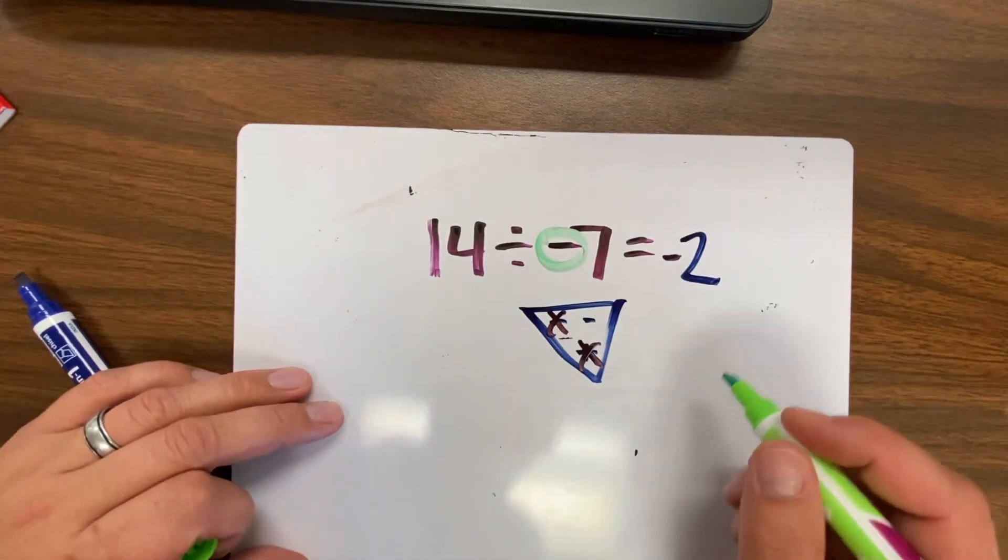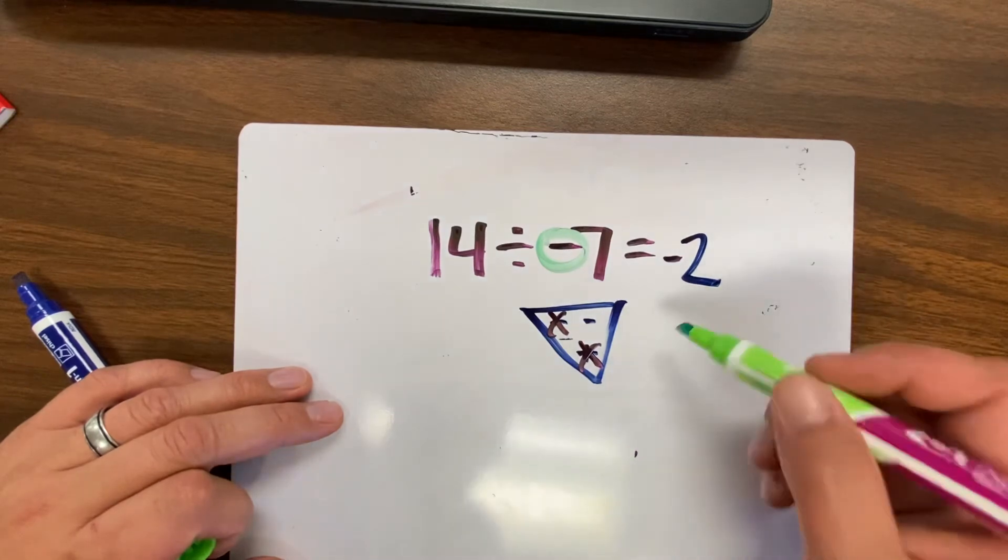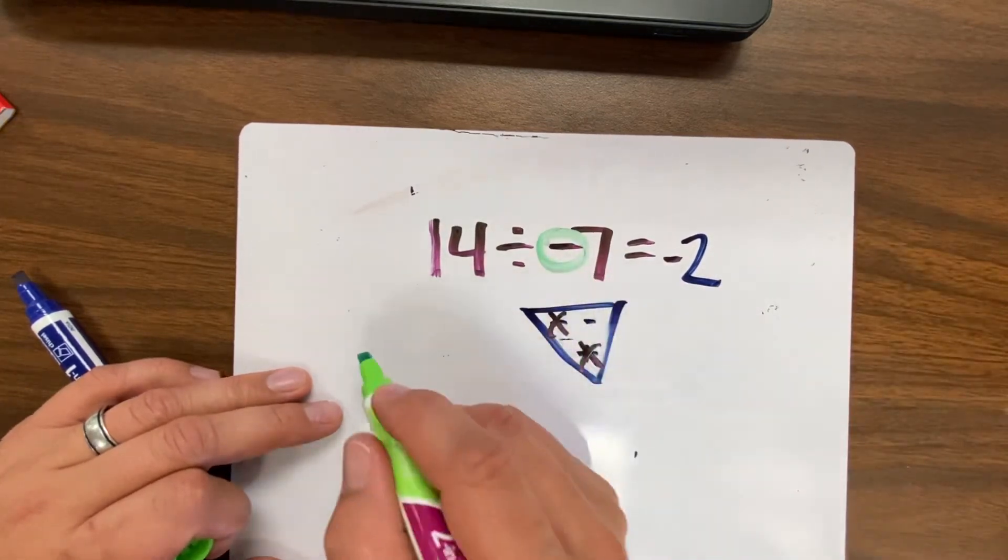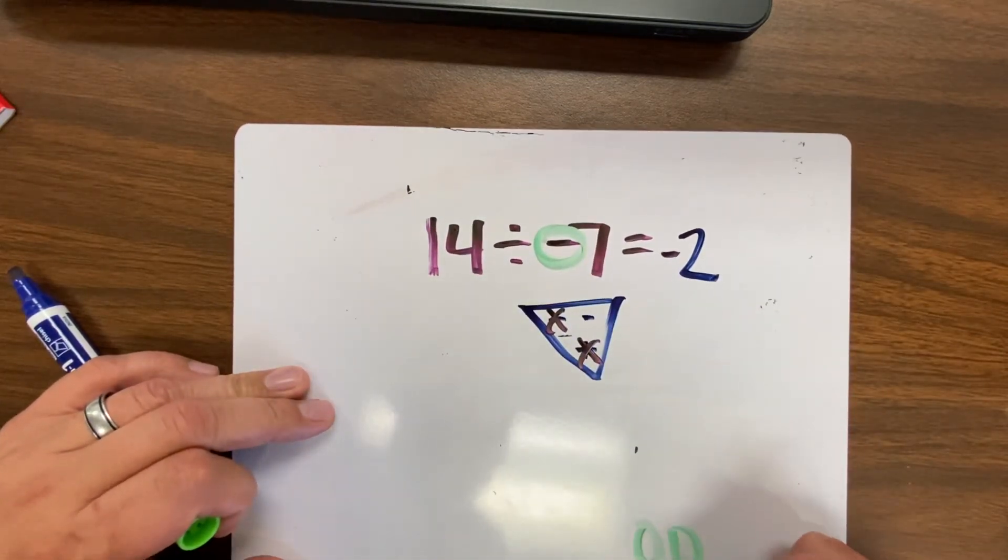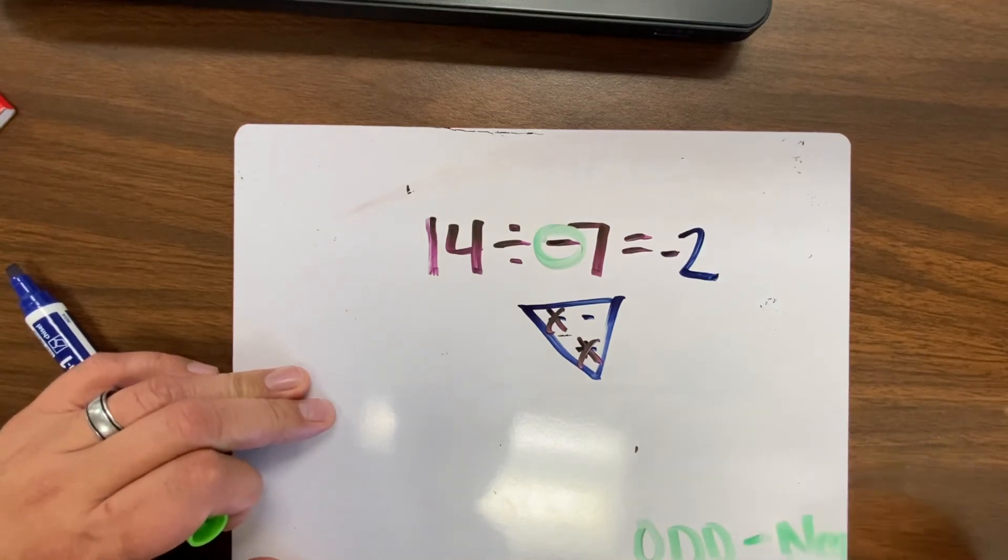If I had 3 negatives, it would be a negative answer. If I had 5 negatives, it would be a negative answer, and so on. Odd amounts are negative. Odd is negative.